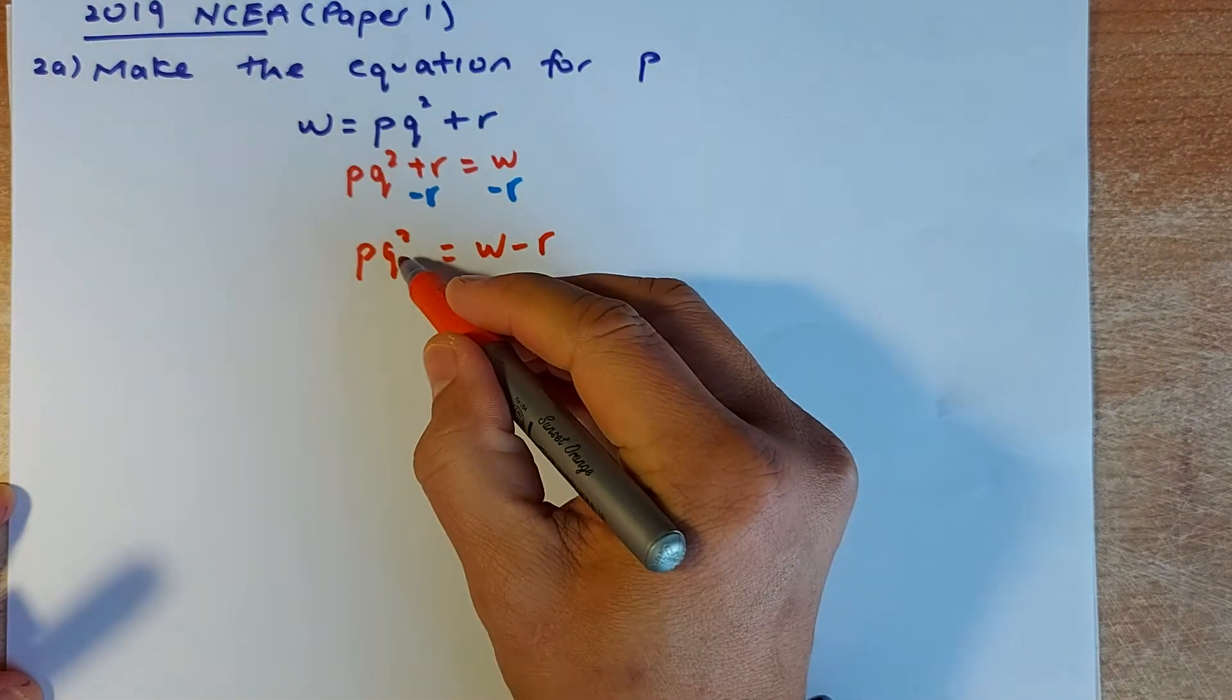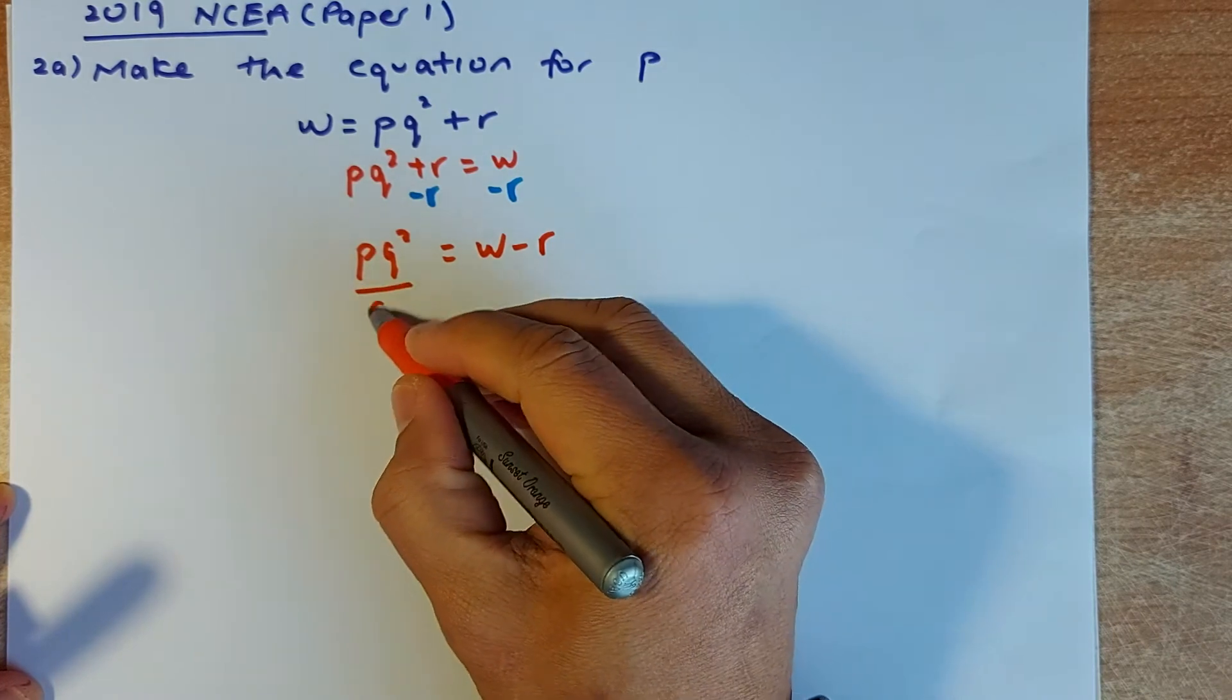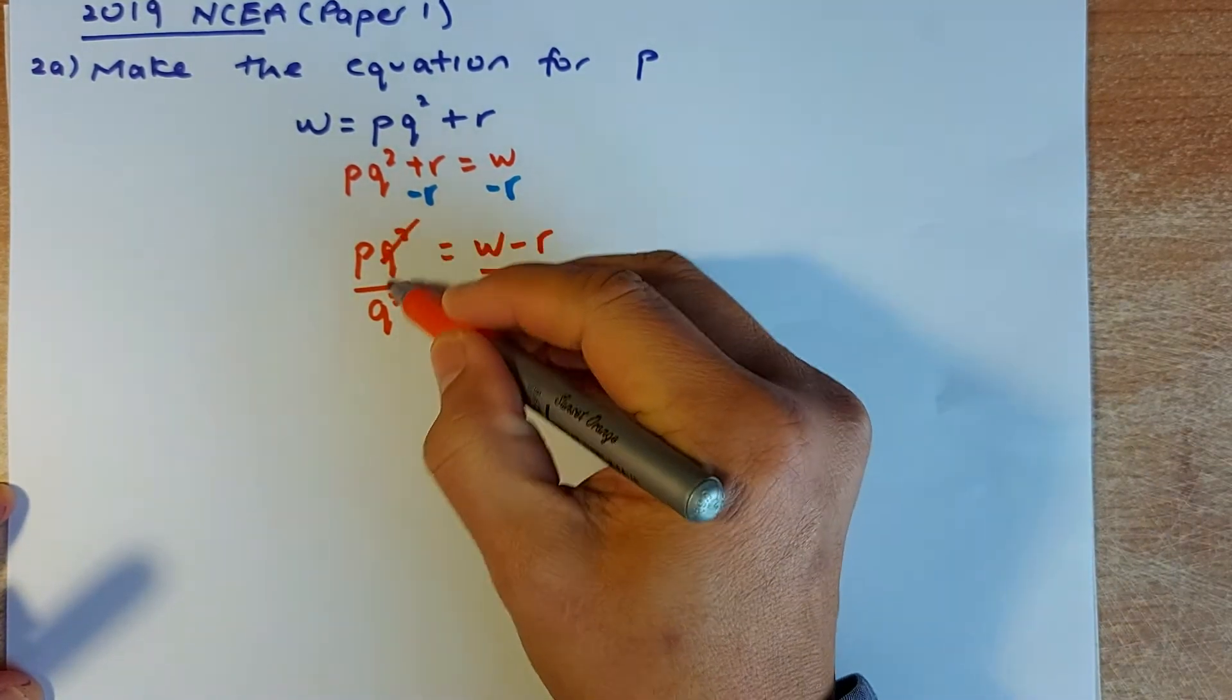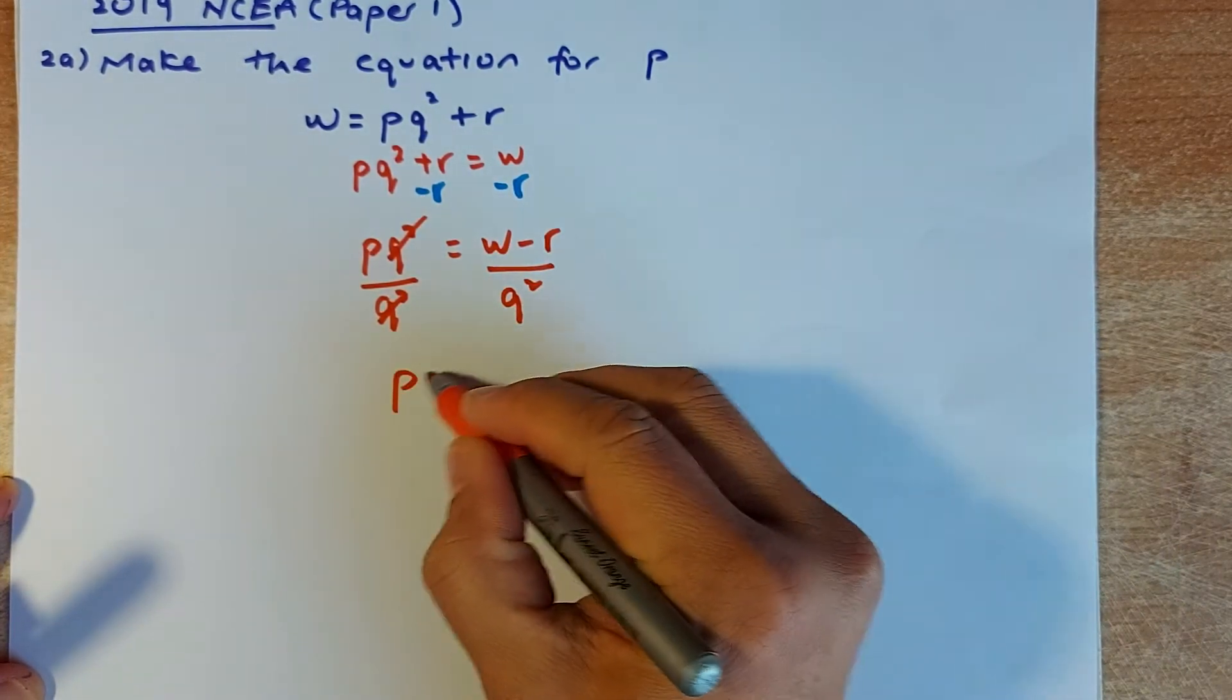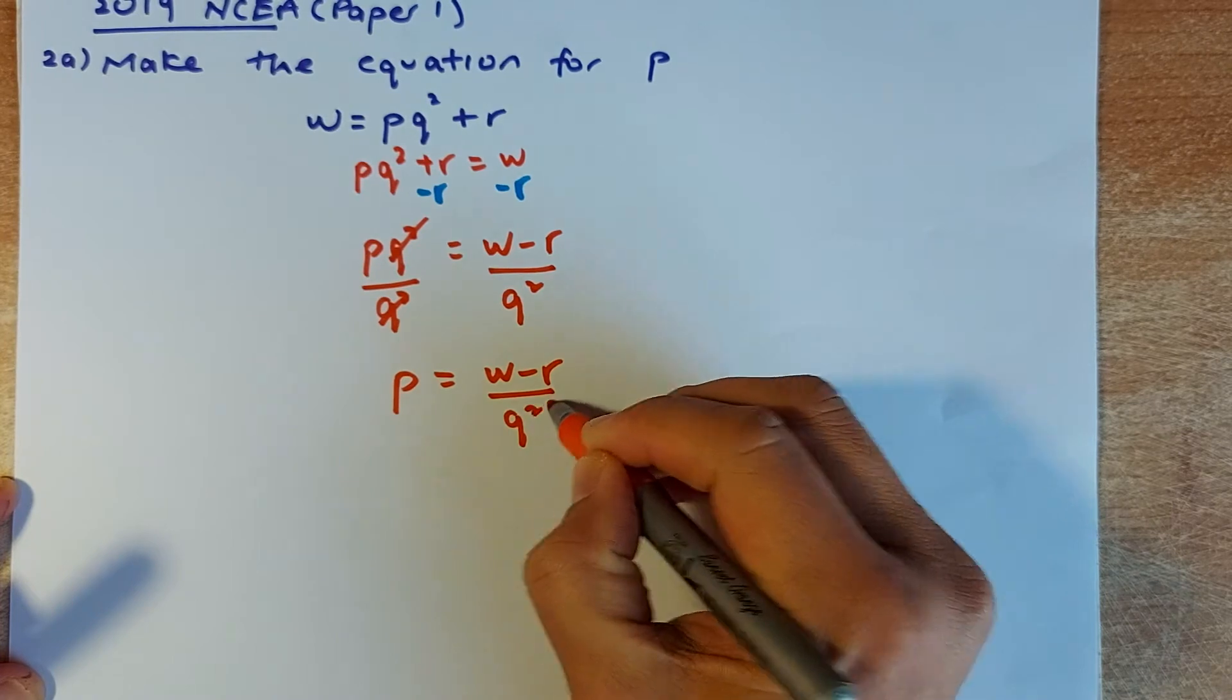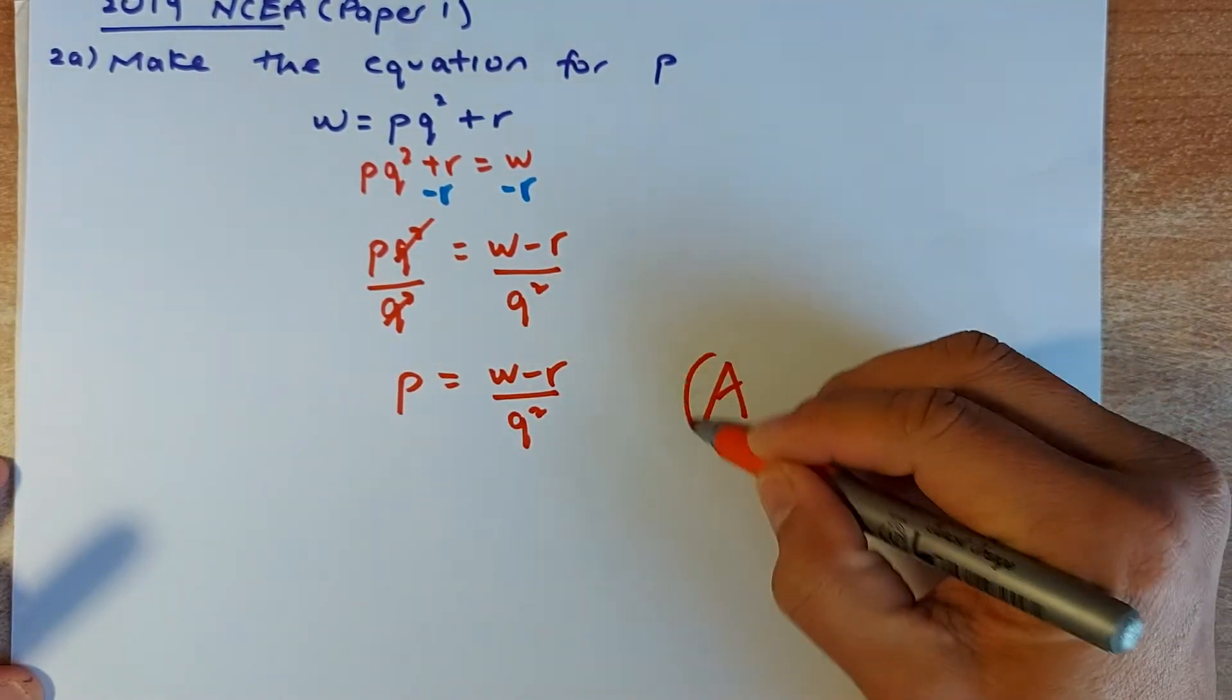Then, of course, you must get rid of the Q squared. To do that, you divide by Q² on both sides. And the Q² will cancel out. So what's left is P equals to (W - R) / Q². And that is an achieve.